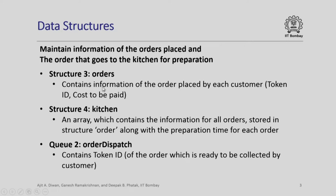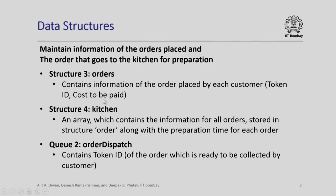We will require one queue, called customer_queue, of type struct customer_info, because this is the information that will be pushed into the queue. We also have a structure for orders, which contains information of the order placed by each customer. For this illustration, we are assuming that the only pertinent information to demonstrate queue usage is the token ID and cost to be paid. Next comes the kitchen data structure — for kitchen we will have an array containing information for all orders, and each individual order is stored in the struct order along with the preparation time.